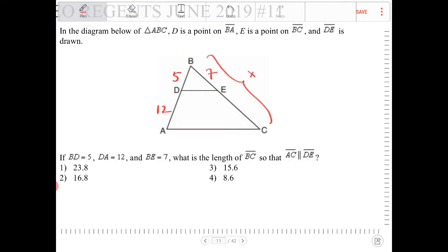So we can say the big triangle, side length X over side length 7 is to, on the other side now, the full length of AB is 17 over 12. I'm sorry, over 5.